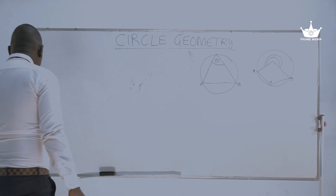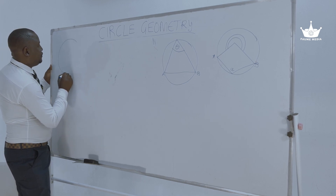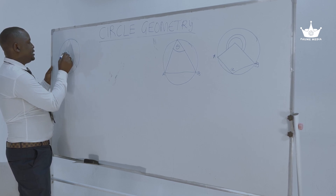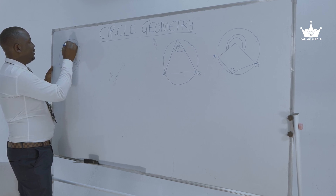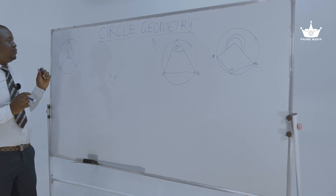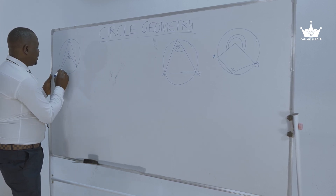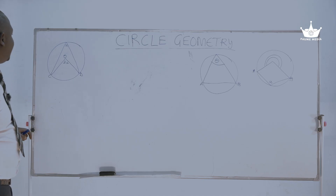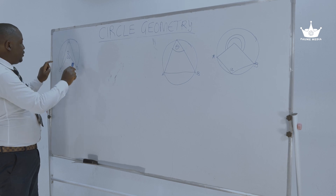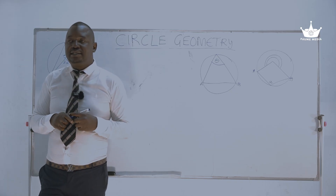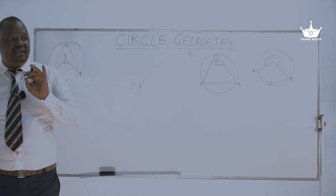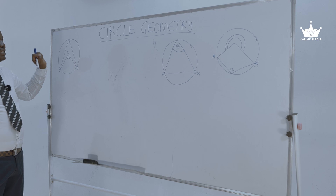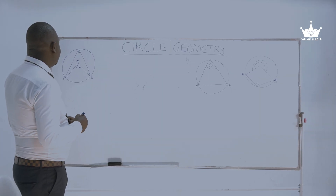Let's move on to the circle theorems now. I'll start with the first theorem. This is the center of a circle O, and I have angle X at the circumference and angle 2X at the center. What you can see from the diagram is that angle X at the circumference and angle 2X at the center are both being subtended by the same arc CD. The theorem goes like this: the angle subtended by an arc at the center is twice the angle at the circumference.